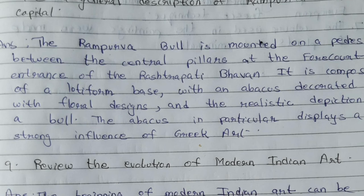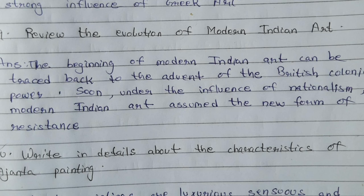Question number 9: Review the evolution of modern Indian art. Answer: The beginning of modern Indian art can be traced back to the advent of British colonial power. Soon, under the influence of rationalism, modern Indian art assumed a new form of resistance.